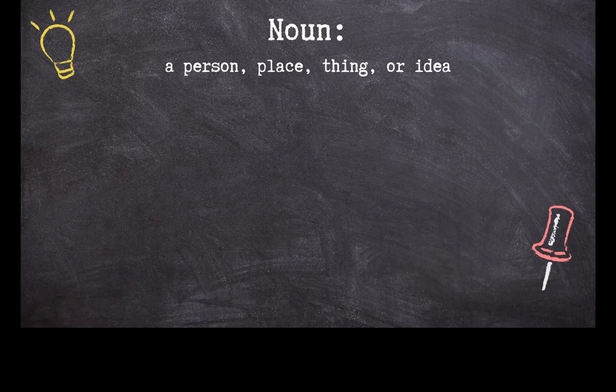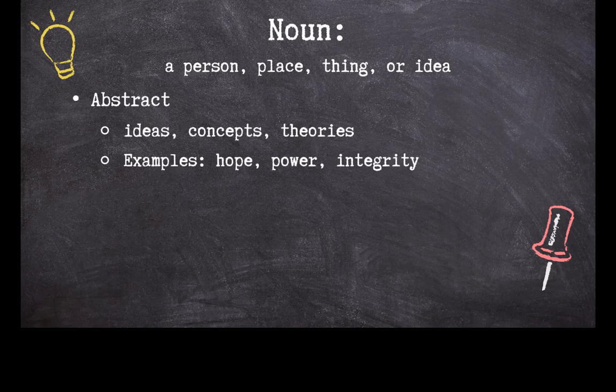First, let's look at abstract nouns. Abstract nouns are ideas, concepts, and theories. They're not physical things that you can encounter or stub your toe on. Things like hope, power, and integrity are all abstract nouns, as are concepts like time and honesty.